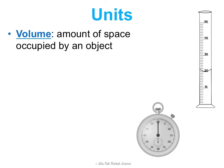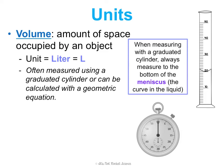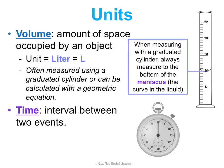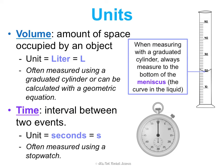Volume is the amount of space occupied by an object, and it's usually calculated with a geometric equation or with water displacement. It doesn't have a true SI unit, but the derived unit for it is the liter, abbreviated as a capital L. When measuring volume in a graduated cylinder, always measure to the bottom of the meniscus — that curve in the liquid. Time is the interval between two events, and the SI unit for time is seconds, abbreviated as a little s, measured using a stopwatch.